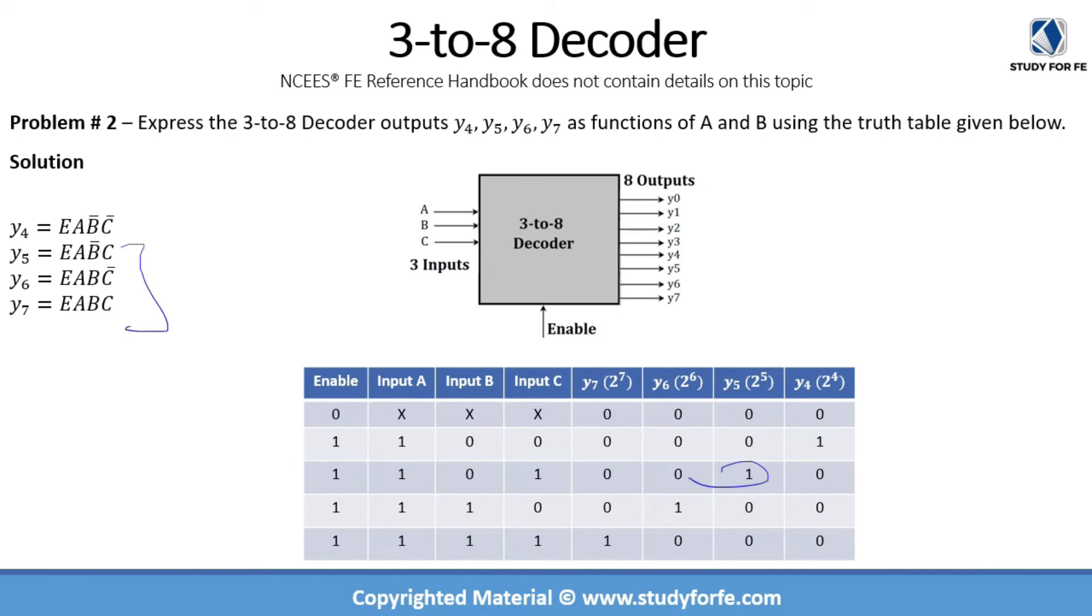And you can go through the same exercise for the remaining ones. For y5, we have E times A times B bar times C. And for y6, we have E times A times B times C bar. And for y7, we have E, A, B, and C. So we've expressed these output values as functions of enable, input A, input B, and input C.